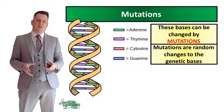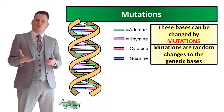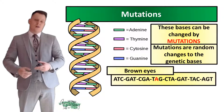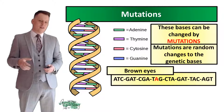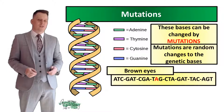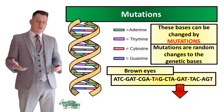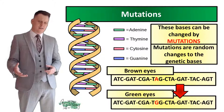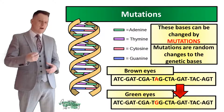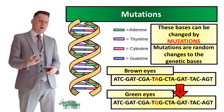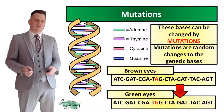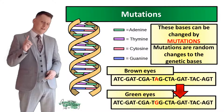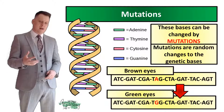These bases can be changed by mutations — random changes to the genetic bases. For example, if someone had the brown eyes allele and that gene went to one of their sperm cells, the gene could undergo a mutation where an adenine base changes to a guanine, resulting in the offspring having green eyes rather than brown. This change wouldn't affect you now, because the mutation would only happen in one singular cell, not in all the cells that make up your eye colour.